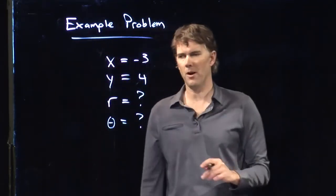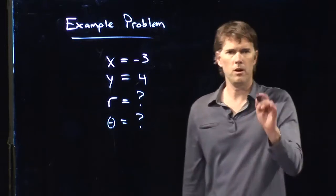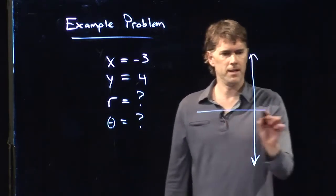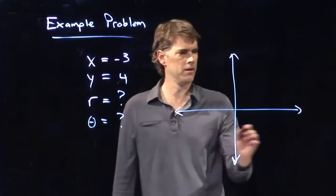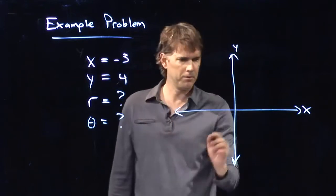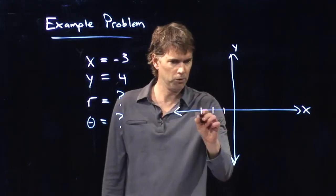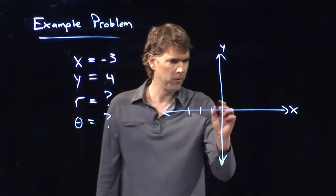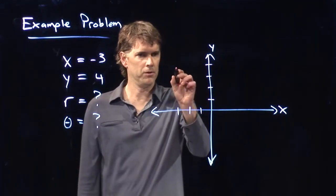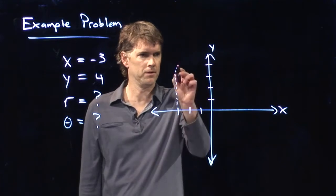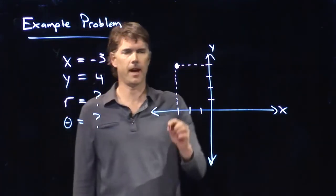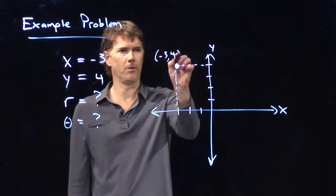All right, so x, y being negative 3, 4 means we are in a particular quadrant here. And if we mark off x equals negative 3, that would be 1, 2, 3, and y equals 4, 1, 2, 3, 4. So where those two lines intercept, that's the point that we're interested in, right there. Okay, that is negative 3, 4.